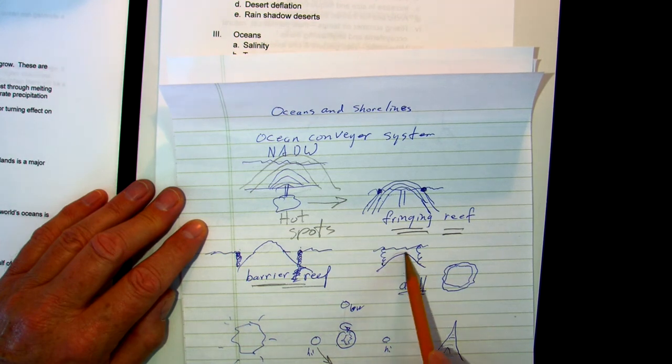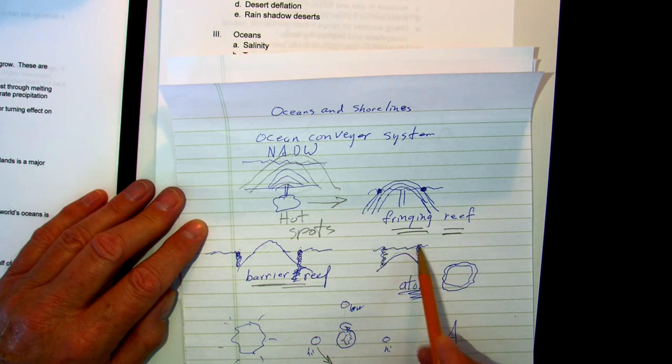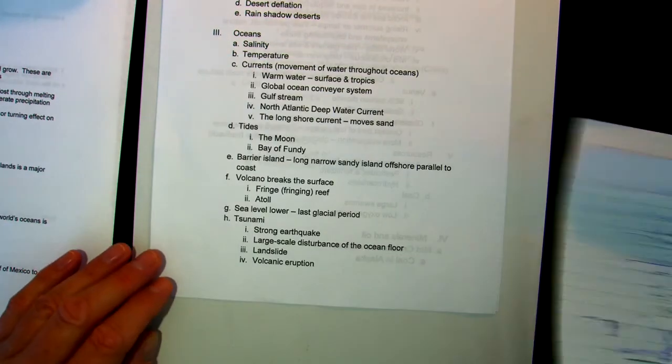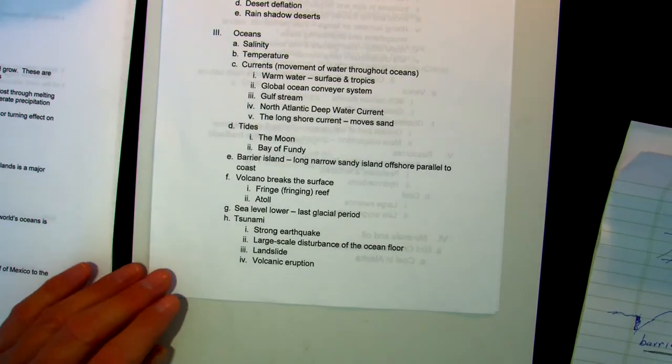Eventually, the island will be worn off below the surface of the sea, and nothing's left but the reef. These can be very tall. From the bird's eye view, it looks something like this. And this is referred to as an atoll. We see a lot of this out in the Pacific.